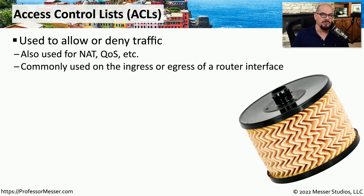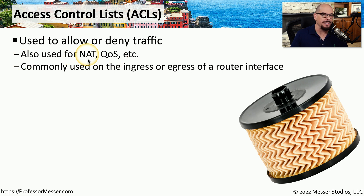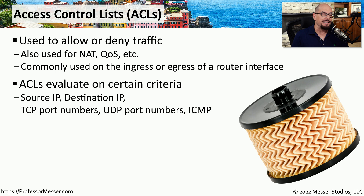Another good logical security technique is to use access control lists, or ACLs. An access control list can allow or disallow access through a network, or allow or disallow access to an object in an operating system. You often see ACLs used on a router to determine what traffic should go through a network address translation or be managed by quality of service. We can also set ACLs on a router to control what traffic should be allowed or disallowed through a particular interface.